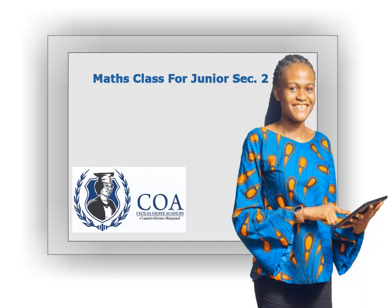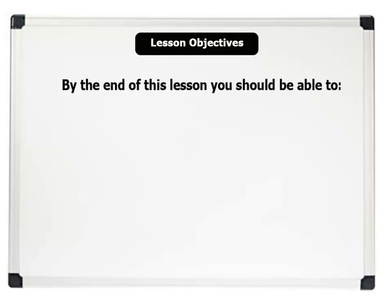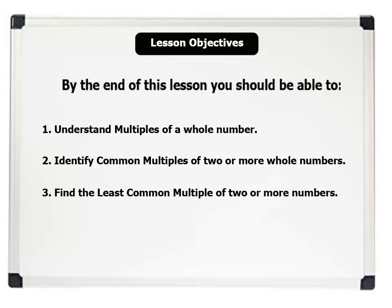Welcome. The topic of this lesson is Least Common Multiples. Let's see our lesson objectives. By the end of this lesson, you should be able to: 1. Understand multiples of a whole number. 2. Identify common multiples of two or more whole numbers. 3. Find the least common multiple of two or more whole numbers.